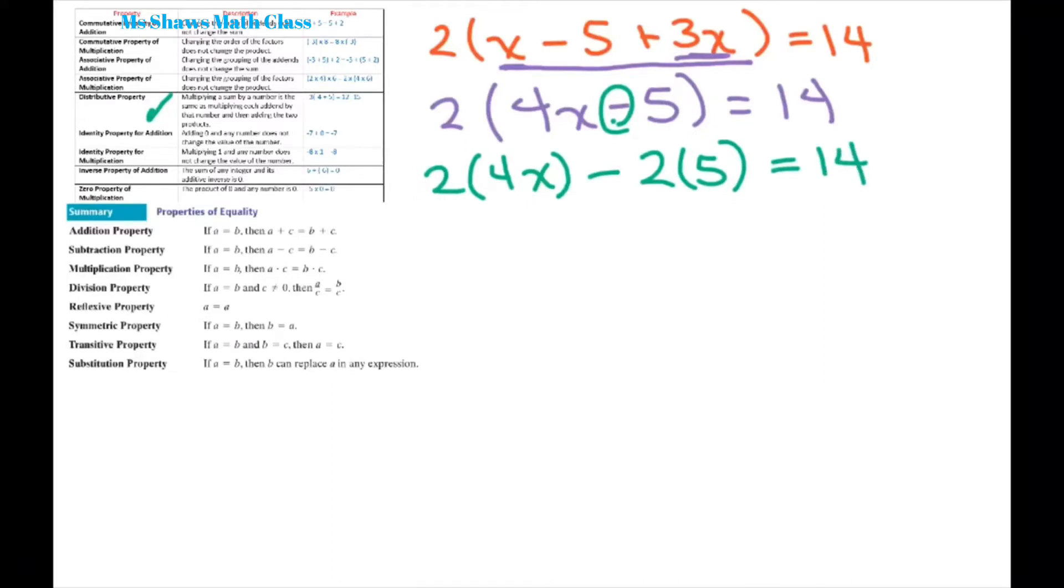So now let's simplify two times four x is eight x and two times five is 10. Now I'm going to use my addition property of equality and add 10 to both sides of the equation. And we get eight x equals 24.